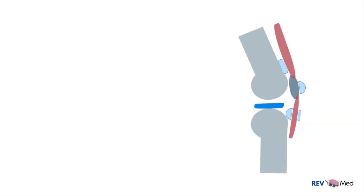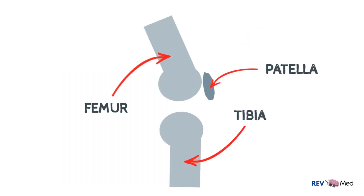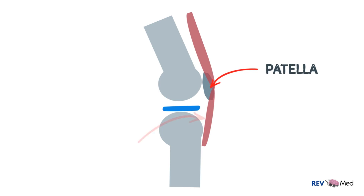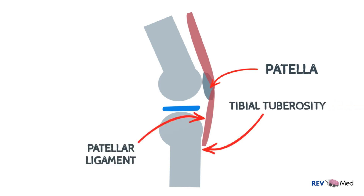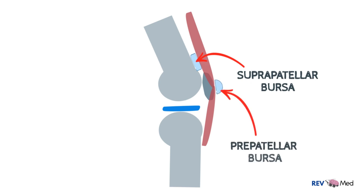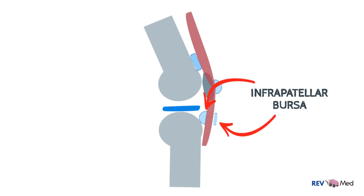Now let's draw the side view and introduce the bursae. Bursas are fluid-filled sacs which help reduce friction. Here we'll draw the femur, tibia, and patella. The menisci are between the joints and the quadriceps tendon comes down, encapsulates the patellar bone, and forms the patellar ligament joining onto the tibial tuberosity. The suprapatellar bursa is found above the patella, the prepatellar bursa is found on top of the patella just below the tendons in the skin, and the infrapatellar bursa is below the patella with a superficial and a deep component.